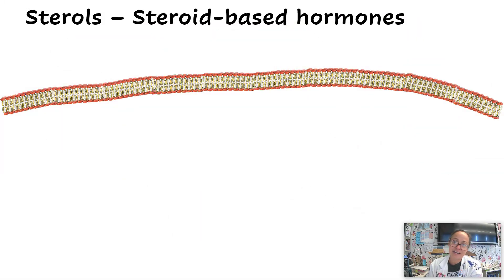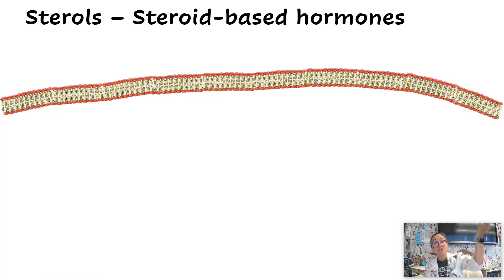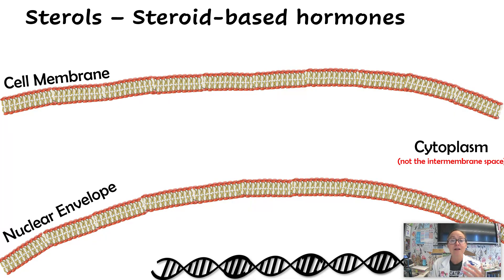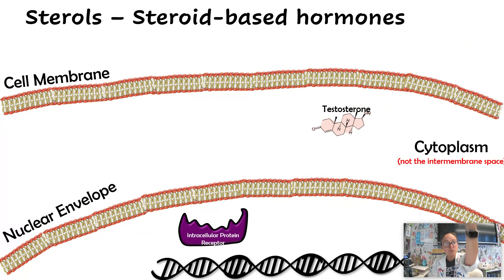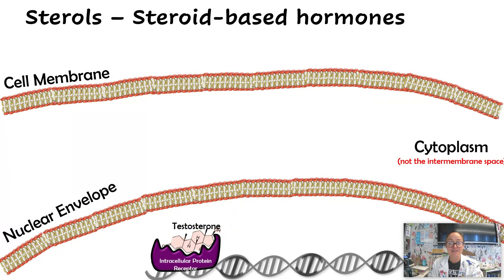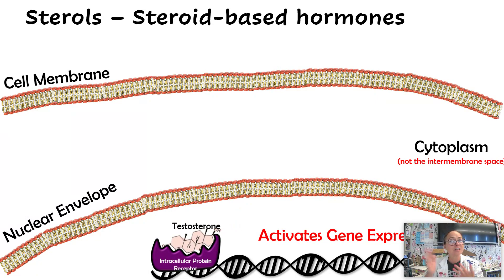Our third and final category of lipids are sterols. In AP Bio, we mainly talk about steroid-based hormones and cholesterol in this category. They are lipid — made of C, H, and O — they are nonpolar and hydrophobic. Steroid hormones travel throughout our body and are used in cell communication. Because they are nonpolar and hydrophobic, they are able to pass right through our cell membranes and nuclear envelopes since the fatty acid tails are also nonpolar. These steroid-based hormones can diffuse right into our cells and influence gene expression — which genes we turn on or turn off.